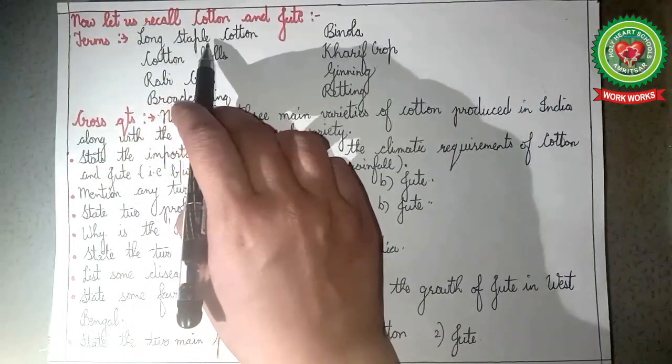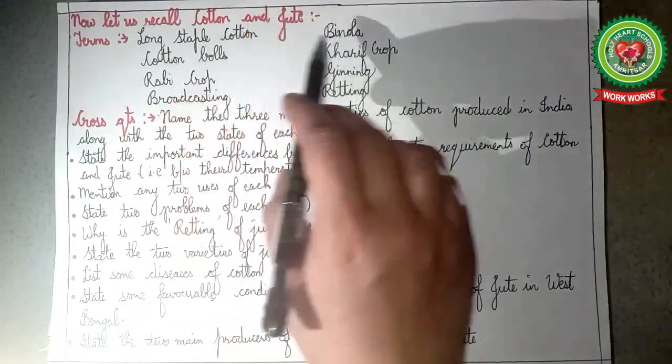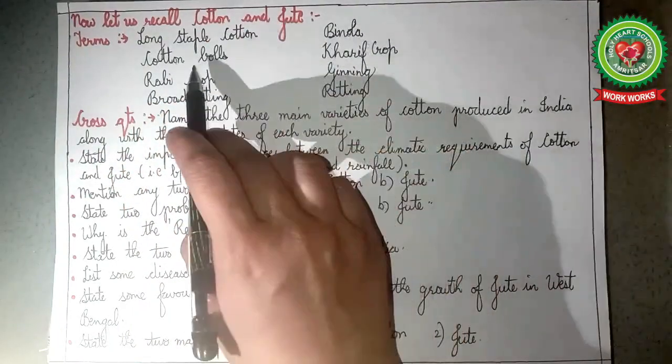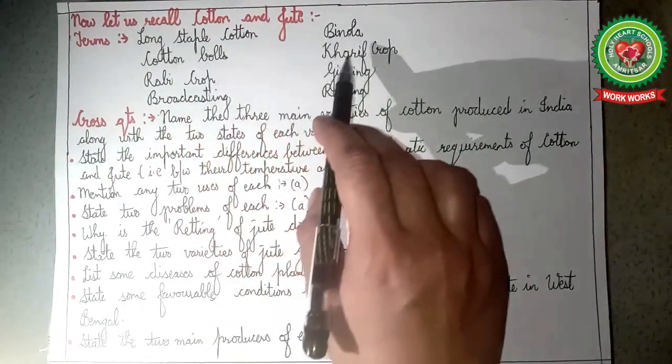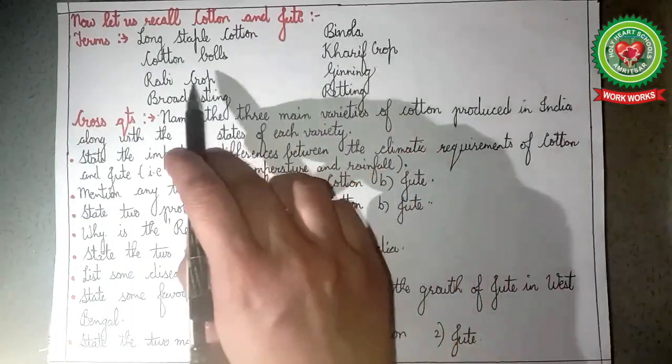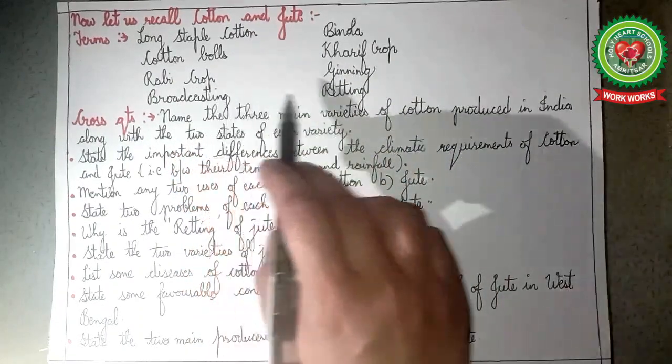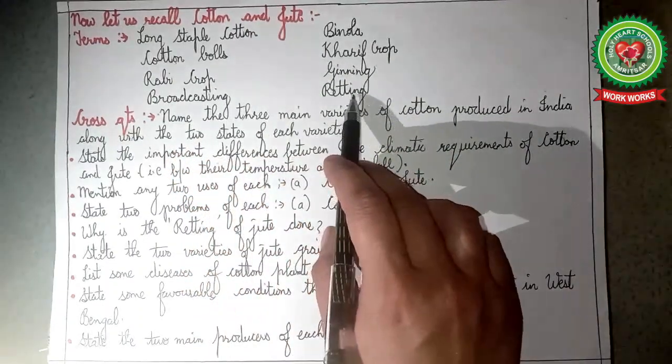Review terms include: number one, long staple cotton; number two, bainola cotton bolls; kharif crops; rabi crops; ginning; broadcasting; and retting.